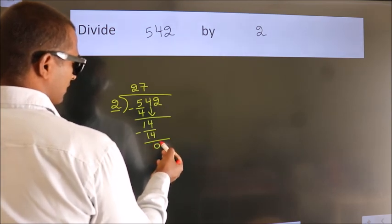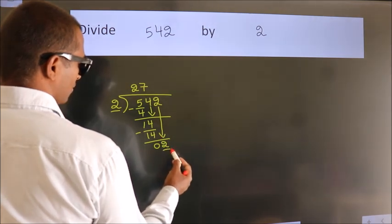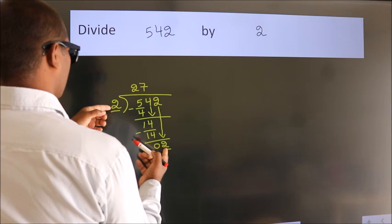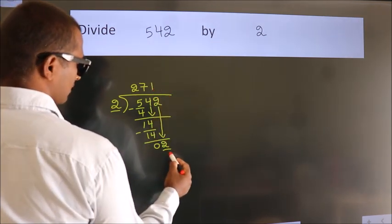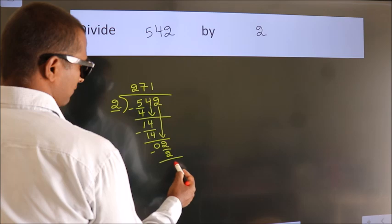After this, bring down the beside number. So 2 down. So 2. When do we get 2? In 2 table, 2 1's, 2. Now we subtract. We get 0.